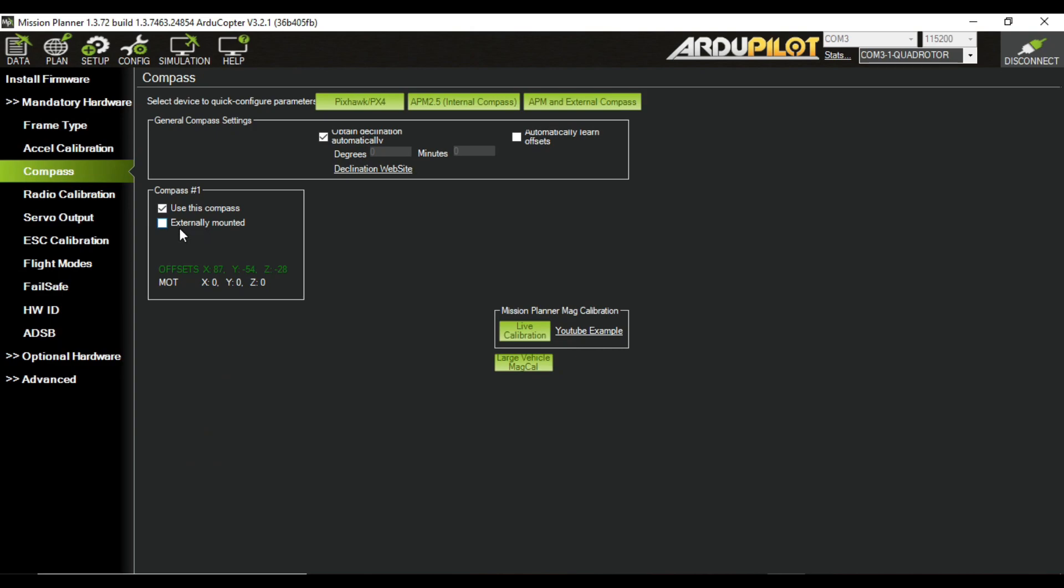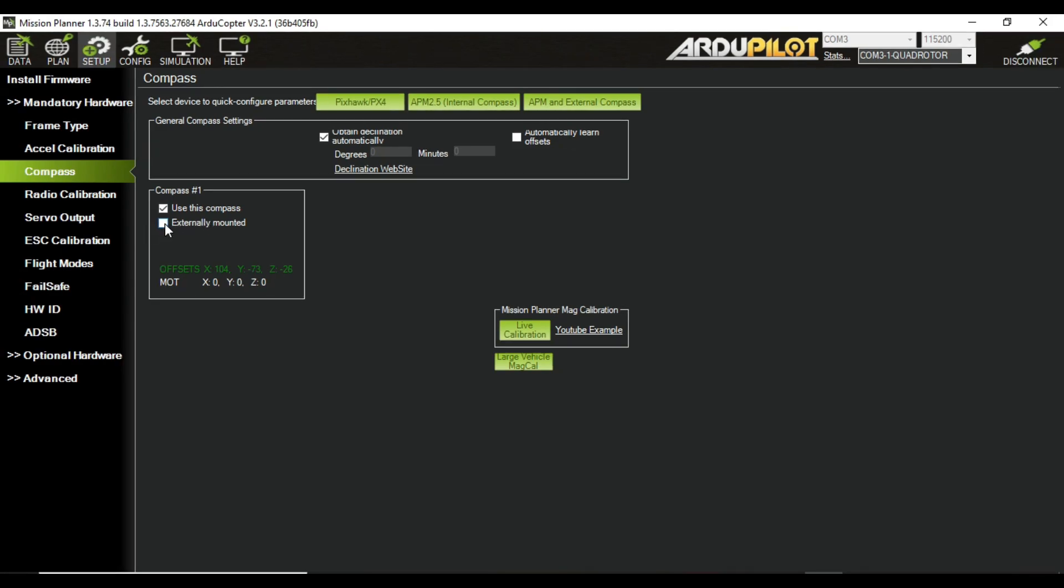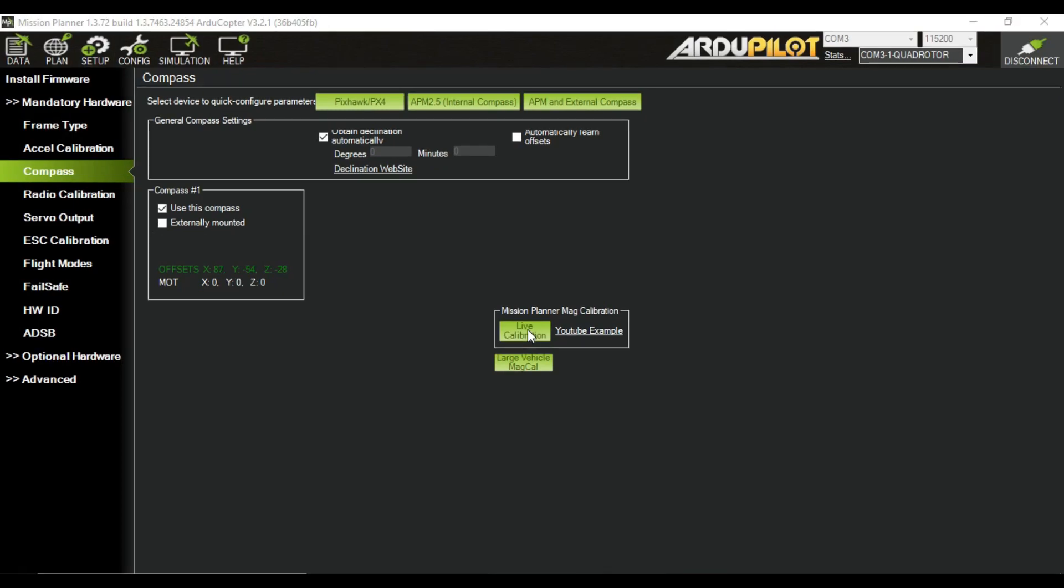As we are using the external compass which is added in the GPS, so we have to tick this box and again calibrate the compass like previously.